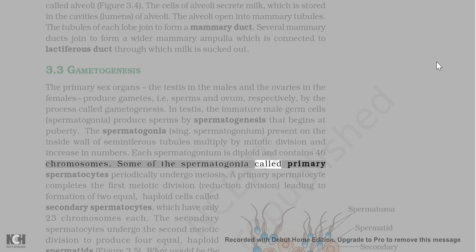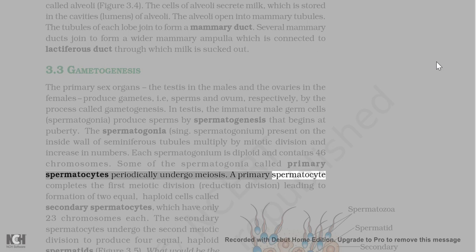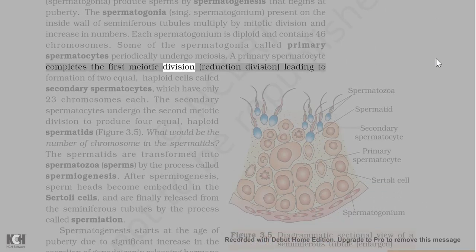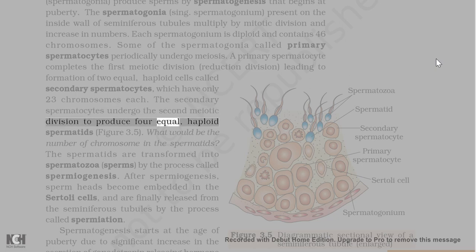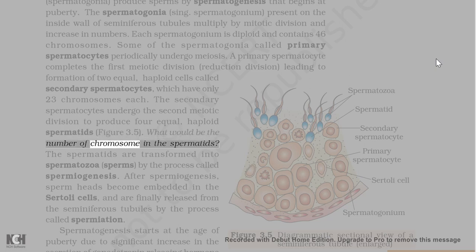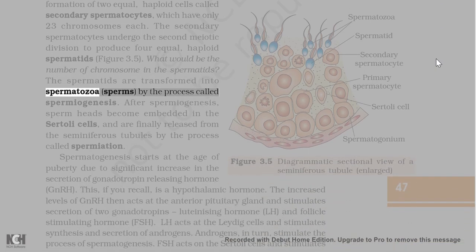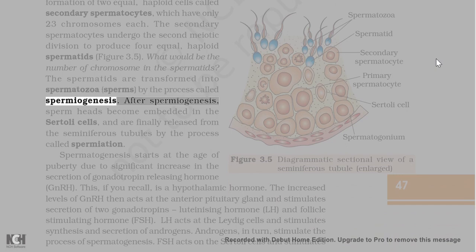Some of the spermatogonia called primary spermatocytes periodically undergo meiosis. A primary spermatocyte completes the first meiotic division (reduction division) leading to formation of two equal haploid cells called secondary spermatocytes, which have only 23 chromosomes each. The secondary spermatocytes undergo the second meiotic division to produce four equal haploid spermatids. The spermatids are transformed into spermatozoa (sperms) by the process called spermiogenesis.